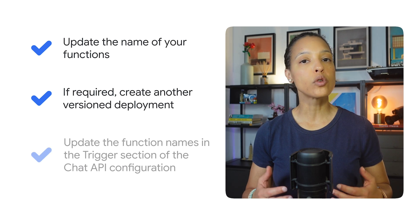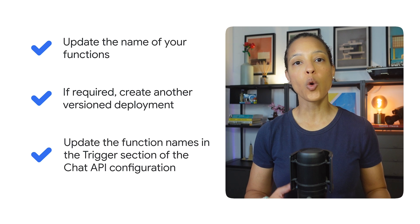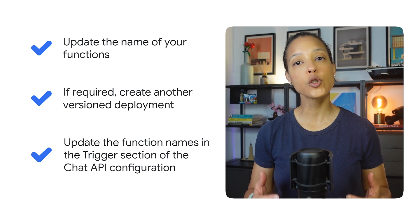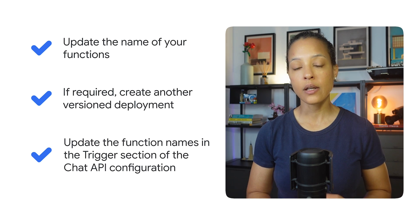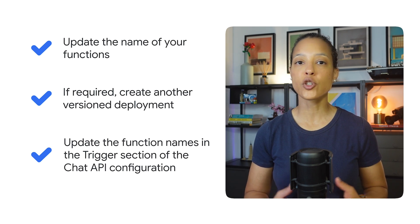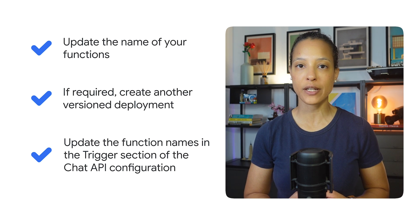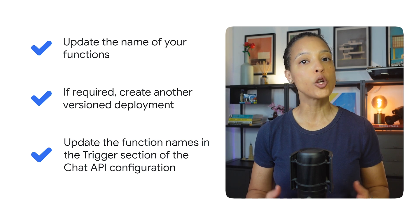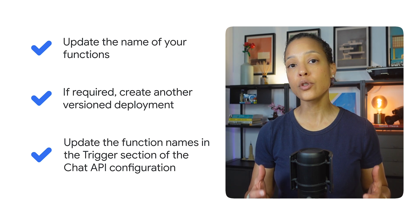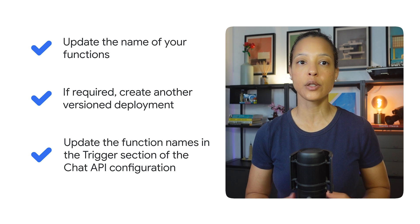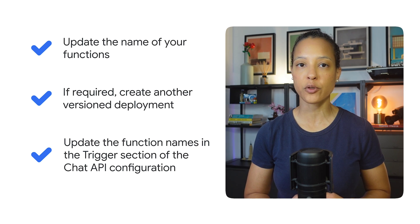In the Google Cloud console, open the Chat API configuration page and in the Triggers section, update the function name for the added-to-space and removed-from-space triggers so that they use the function name that you're currently using in your Apps Script project.